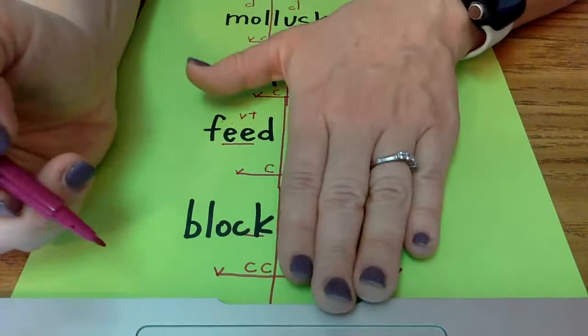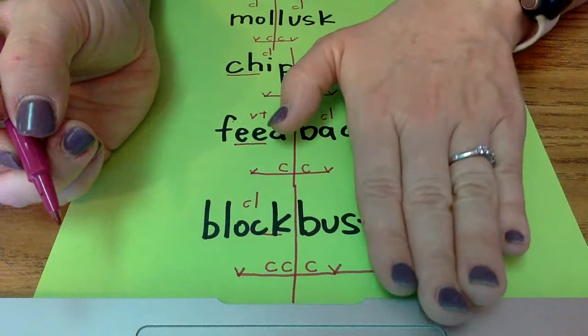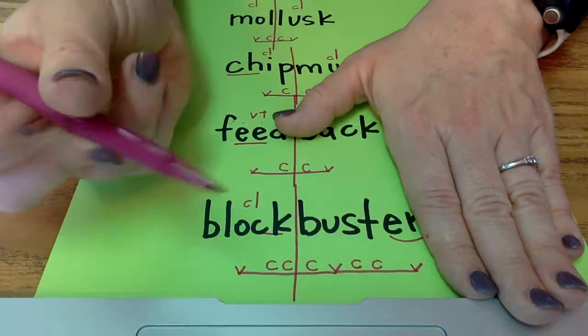All right. Closed. We'll have B-L-O-C-K. We're not going to split S-T. Closed. B-U-S-T-E-R. Three syllables. B-L-O-C-K-B-U-S-T-E-R. Blockbuster.